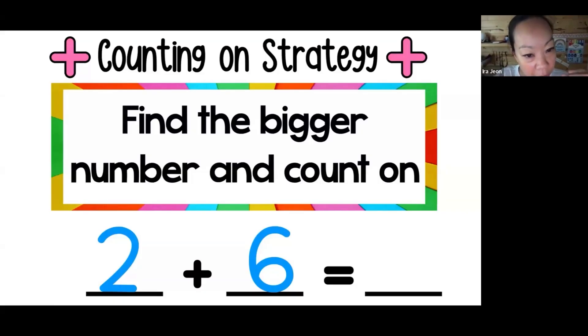This is how you do this strategy. There's lots of ways you can add, counting on is just one of these strategies. So what you have to do is find the bigger number first. That's easy peasy, right? Can you guys show me with your fingers which number is bigger? Is 2 bigger or 6 bigger? You should know right away the bigger number is 6.